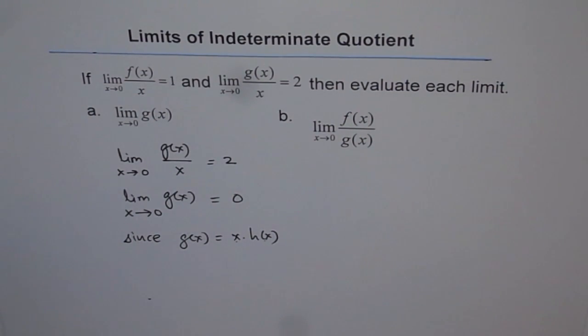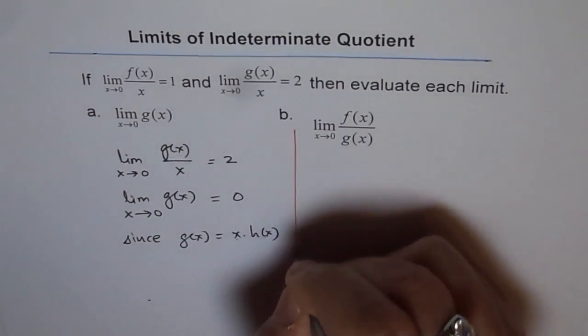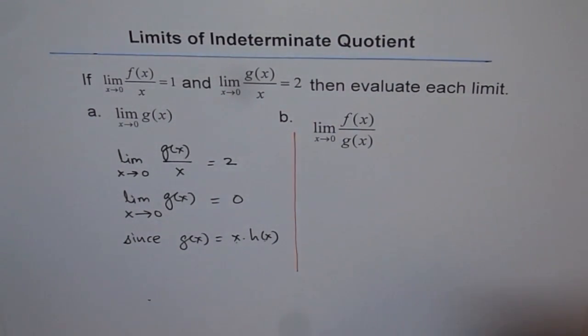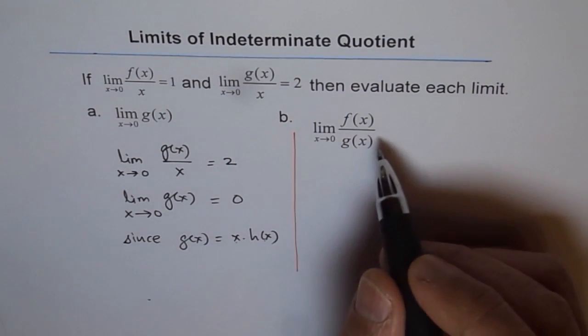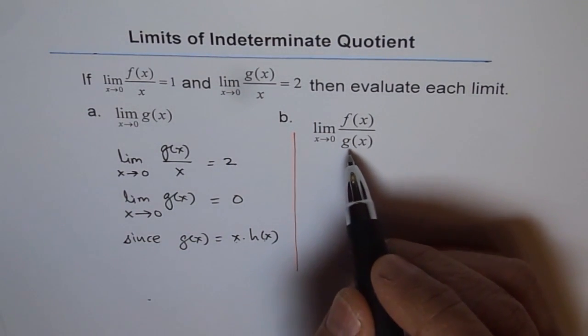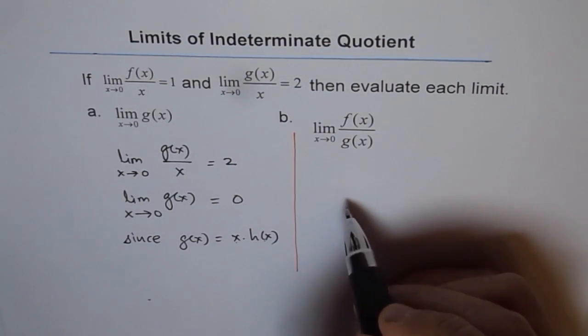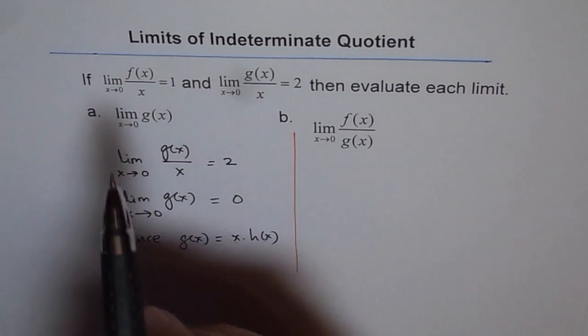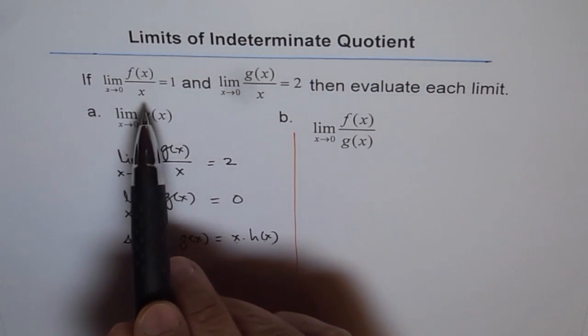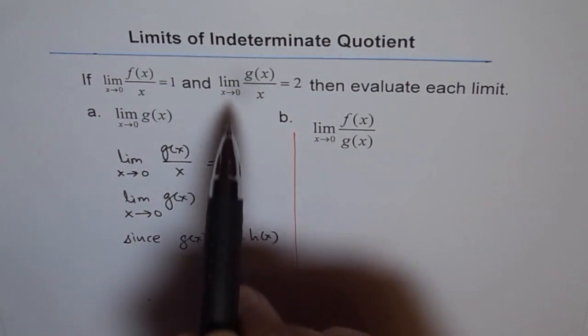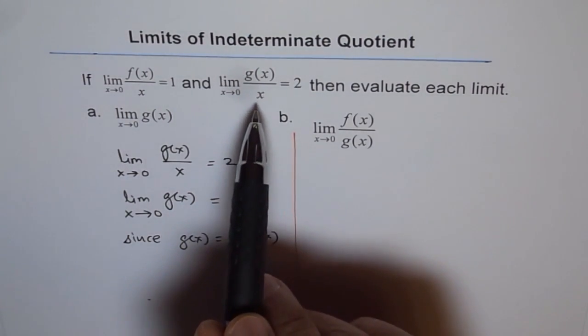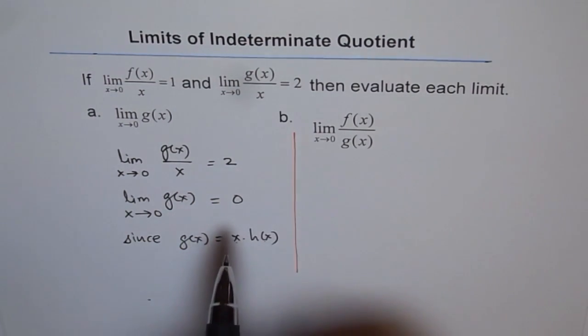Now, let's do part B. Here we are trying to find limit of the function f of x over g of x. We know that limit of function f of x over x is 1 and limit of function g of x over x is 2. From the properties of the limit, we can say